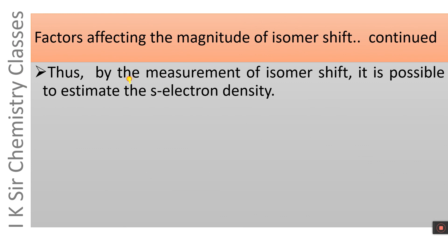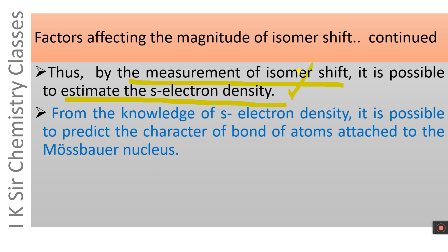By measurement of isomer shift, it is possible to determine s electron density. From the knowledge of s electron density, it is possible to predict the character of bonds of atoms attached to the Mössbauer nucleus. If we know the s electron density from the isomer shift measurement, we can predict the character of bonding in the compound.